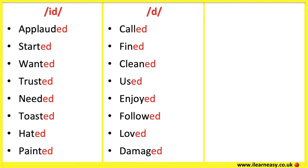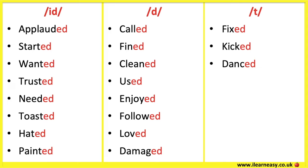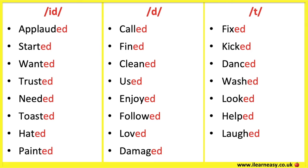The letters E-D make the 't' sound when the root word ends with letters that aren't voiced. Usually, they're whispered. These include the letters K, P, C, S, H, CH, GH, TH, X. For example: fixed, kicked, danced, washed, looked, helped, laughed, watched.